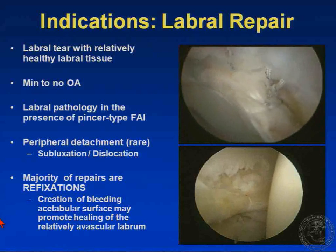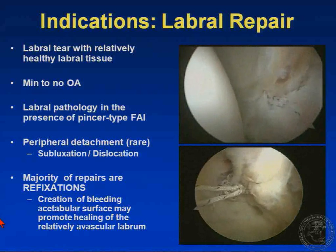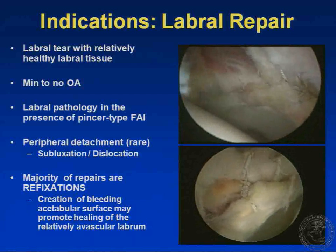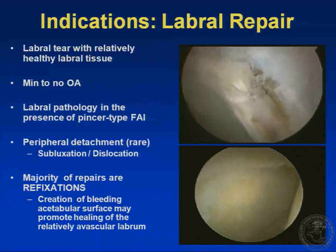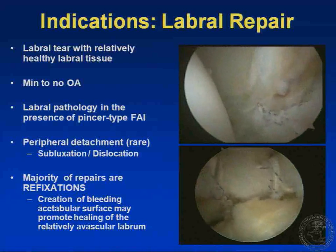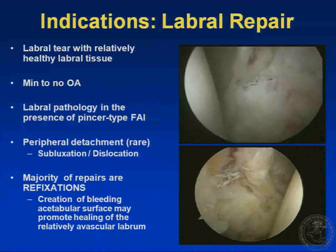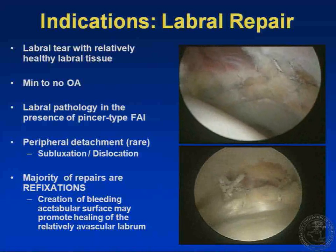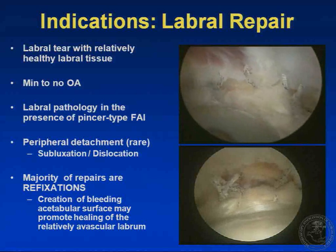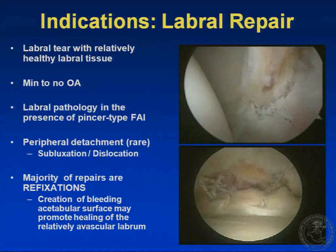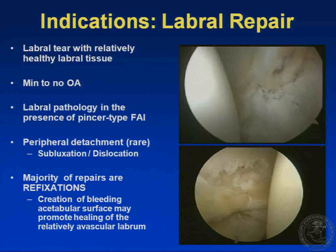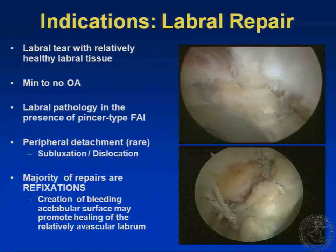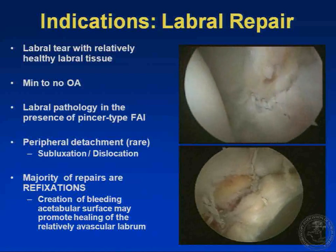My indications for labral repair are: a labral tear with relatively healthy labral tissue and minimal degenerative changes, and labral pathology in the presence of pincer-type FAI in order to access the acetabular rim. Peripheral detachments are relatively rare and are most commonly associated with subluxation or traumatic dislocation. The majority of our repairs are refixations, which may have the added advantage of creating a bleeding surface for the relatively avascular labrum to heal back to.